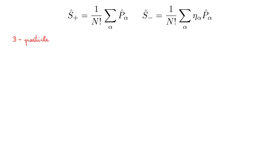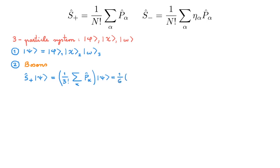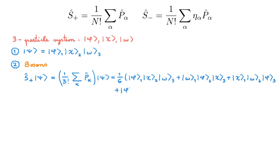Let's now look at a three-particle system. The single particle states are phi, chi, and omega. Step 1 is to build Psi as the tensor product, again randomly associating each state with a particle. In step 2, for bosons we apply the symmetrizer on Psi. Expanding the symmetrizer gives all six permutations of three elements, yielding six terms: phi chi omega, omega phi chi, chi omega phi, phi omega chi, chi phi omega, omega chi phi.